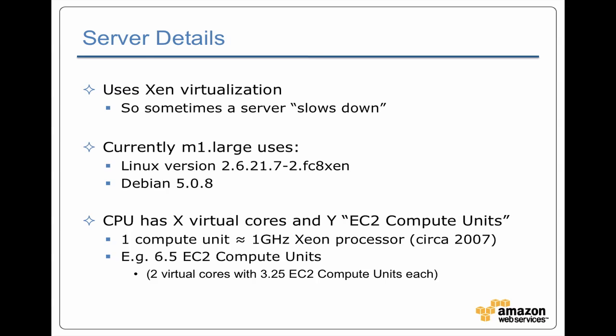These servers typically aren't physical servers — they're virtualized servers. Amazon uses Xen virtualization. And because of that, a virtualized server can run slower than others because other processes on the same physical server are taking up more of the time.